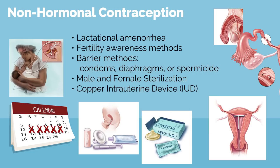Non-hormonal options include lactational amenorrhea, fertility awareness methods, and barrier methods such as condoms, diaphragms, or spermicide. They also include male and female sterilization and the copper intrauterine device.